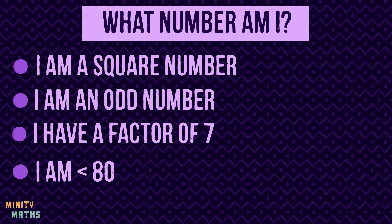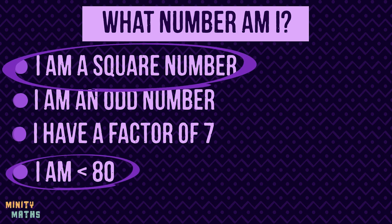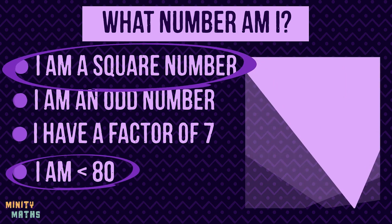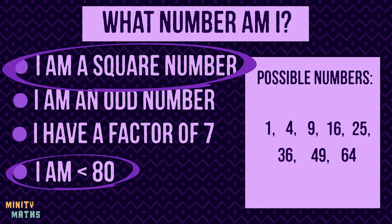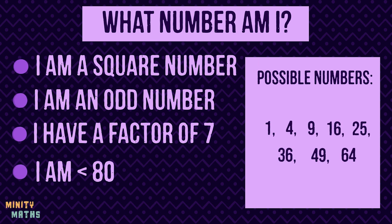In this case we could start with these two clues and list all the square numbers that are less than 80. If we were to start with odd numbers under 80 we would have to write out a much bigger list.